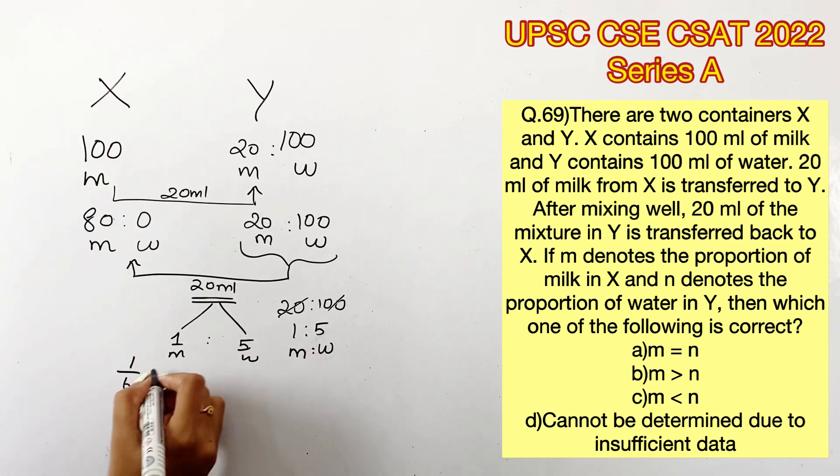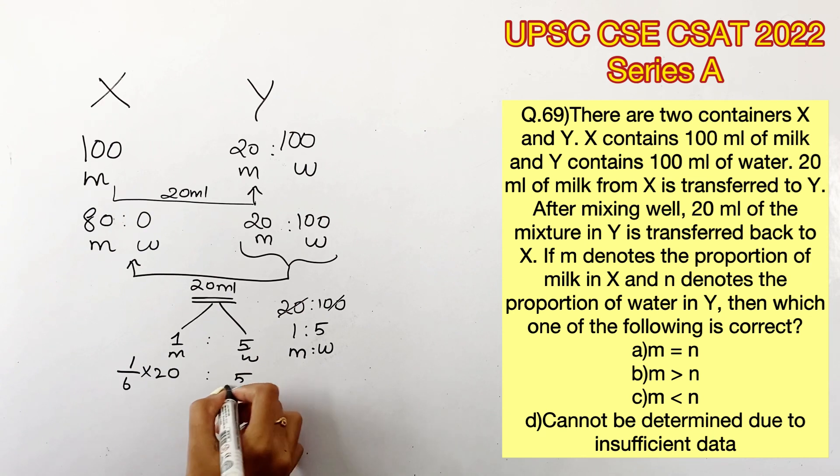Which means in a total of six parts, 1/6 × 20 is milk and 5/6 × 20 is water. Solving this, we get 3.33 and 16.66, which represents that 3.33 ml of milk is present in 20 ml of the mixture and 16.66 ml water is present in 20 ml mixture.